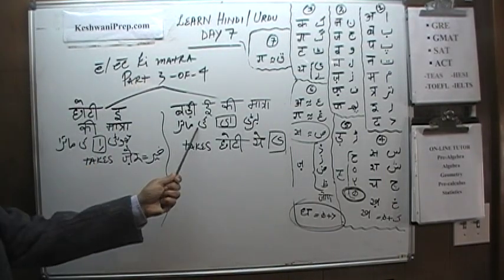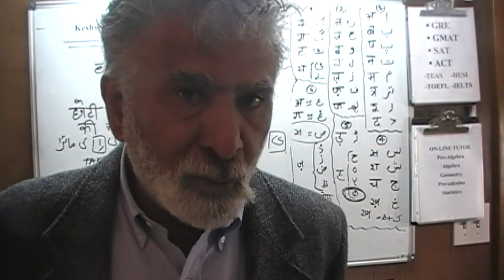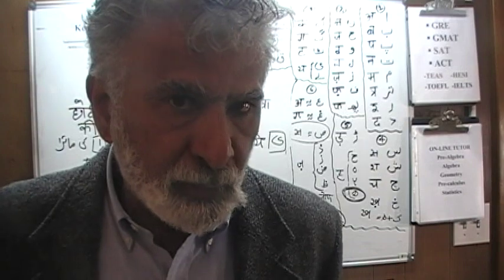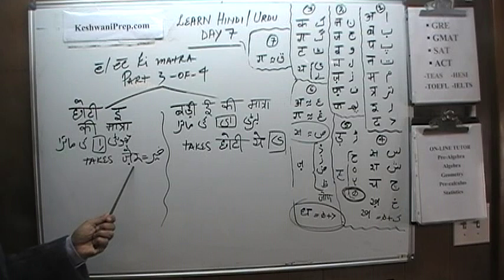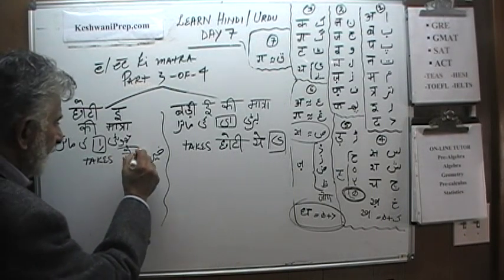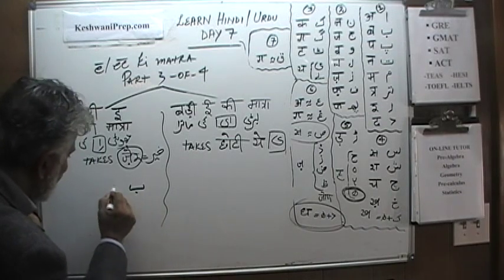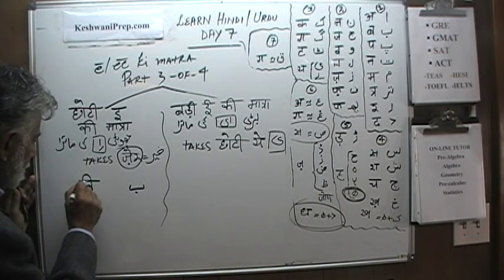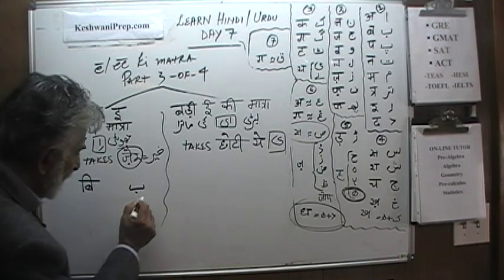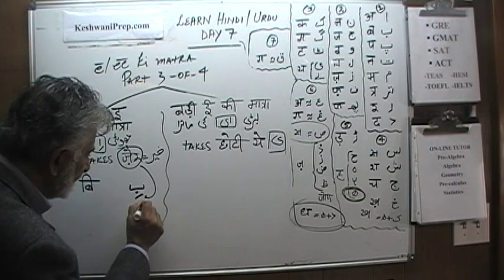Choti Iki Matra and Badi Iki Matra. The E sound in a word can be either short E or long E. Short E is the Choti Iki Matra; long E is the Badi Iki Matra. The Choti Iki Matra in Urdu takes a special symbol called Zer — a line underneath the letter. So if you have a B and want to make a short E sound, in Hindi you put a line to the left of it, and in Urdu you put a Zer underneath it.